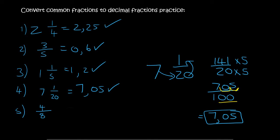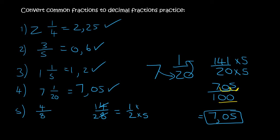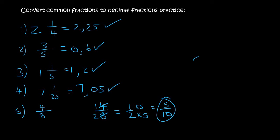The next one: 4 over 8. There are different ways of doing this. You could realize 4 goes into itself once and 4 goes into 8 twice, so that's actually just 1 over 2. And so 2 can be changed into 10 by multiplying by 5, and so you get 5 over 10. There is only one zero at the bottom, the decimal is already at the back, so we only move it once, and so the answer is 0.5.